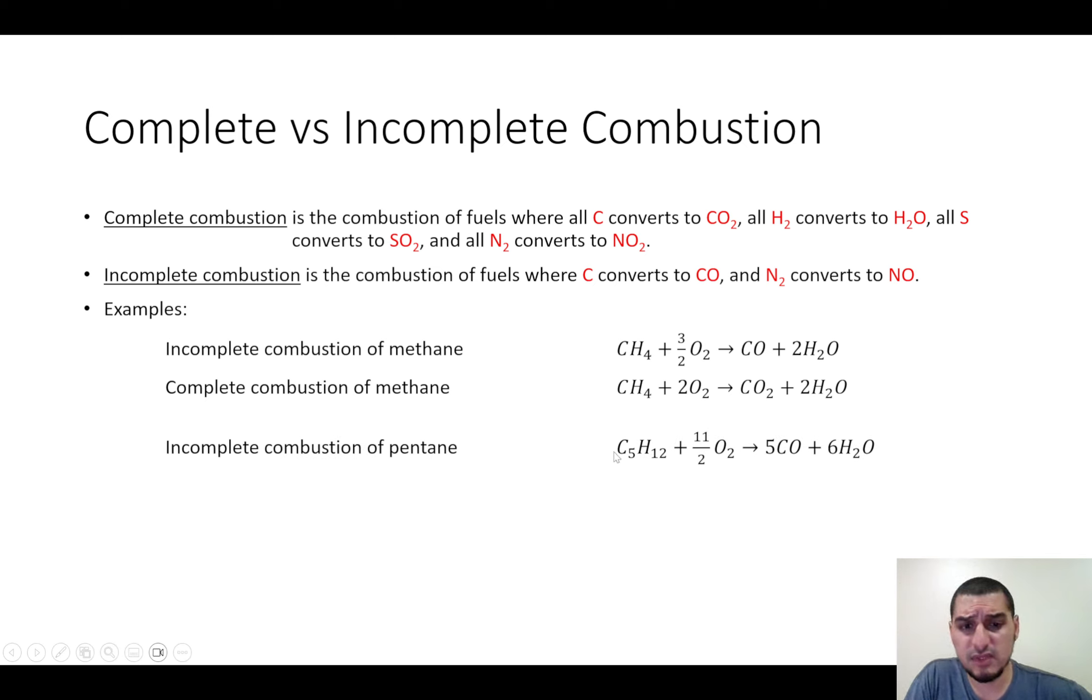For example, if we have C5H12, then it will produce five CO, six H2O. And then we can get back to oxygen—it's five plus six, 11/2 O2. If it's complete combustion, then we have five CO2, six H2O. We have 10 plus six, that's 16/2, which is 8O2.